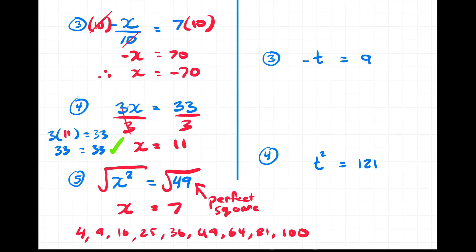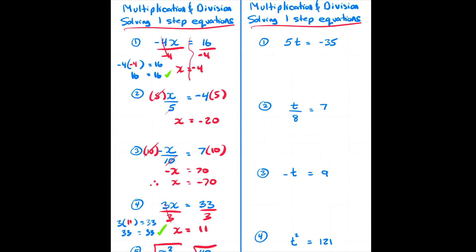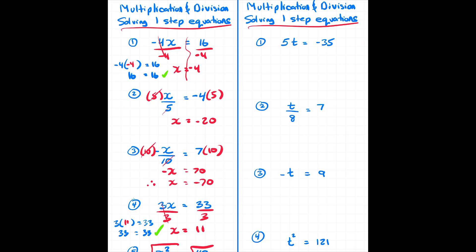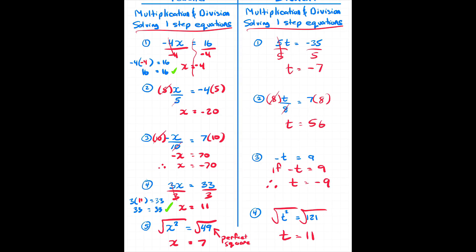On the right hand side, there are four questions for you to try. Pause the video and return when you are finished. Here are the answers — hopefully you did all right. The last one, t squared equals 121: the square root of 121 is 11, because 11 times 11 is 121.